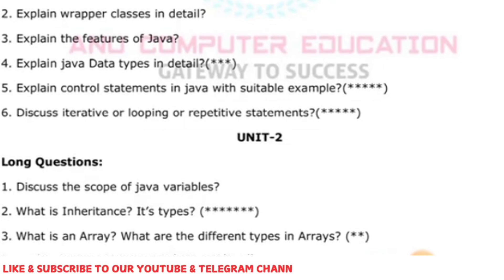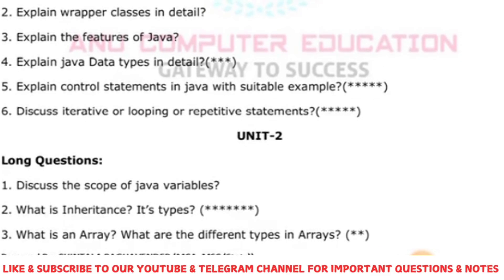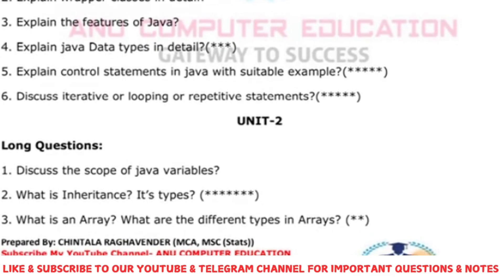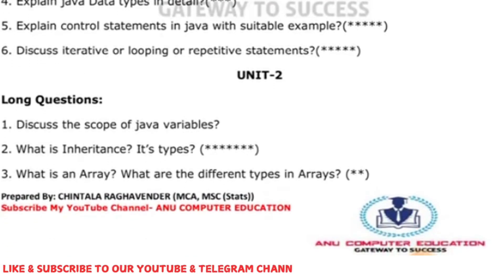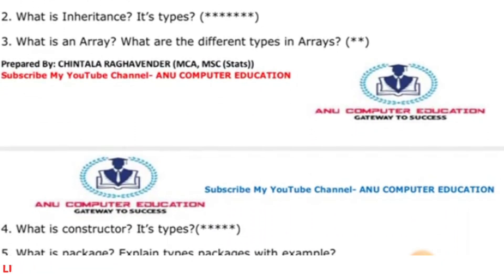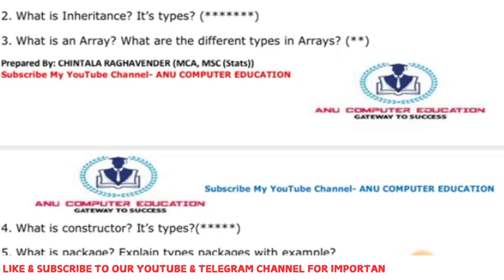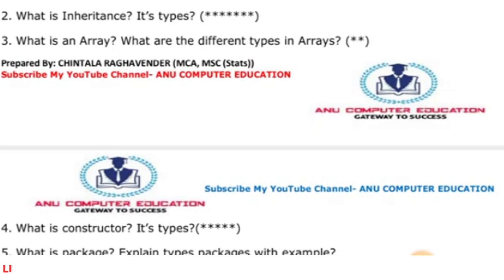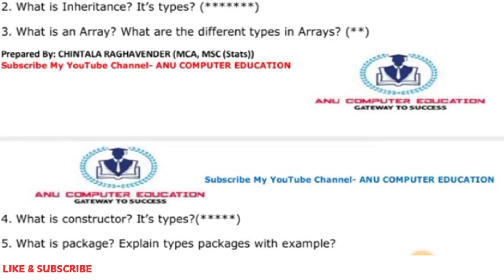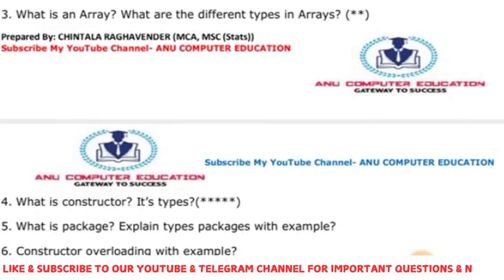Explain what is an array — a collection of storing similar type of values in a single variable — and cover 1D and 2D arrays. Inheritance is a very important question, expect a 20-mark question from it. Also cover what is a constructor and its types: a constructor is a method with the same name as the class and no return type. There are four types: copy constructor, parameterized constructor, object constructor, and single parameterized constructor.